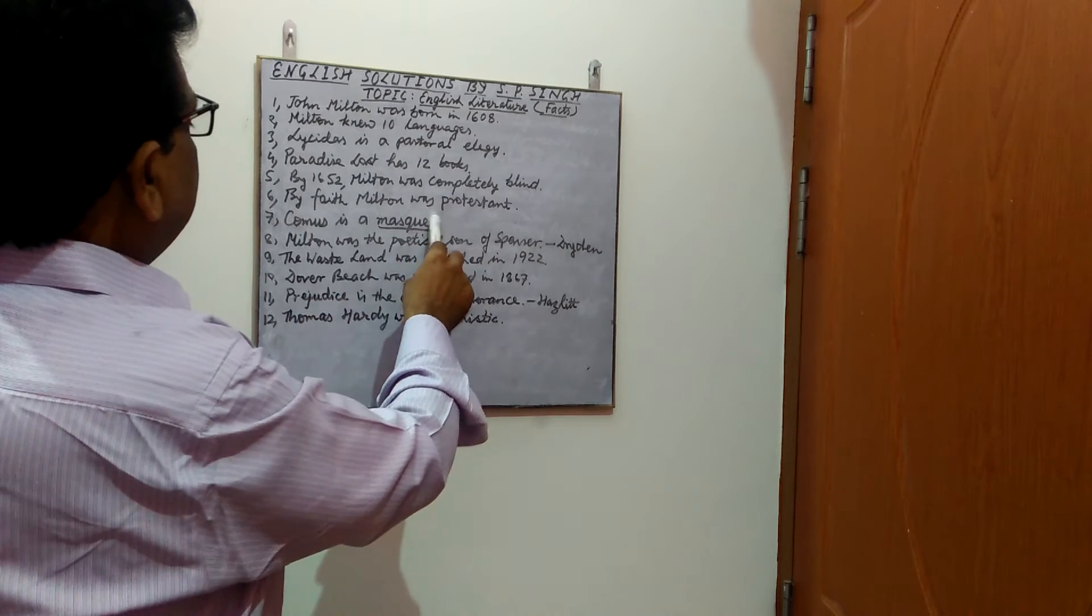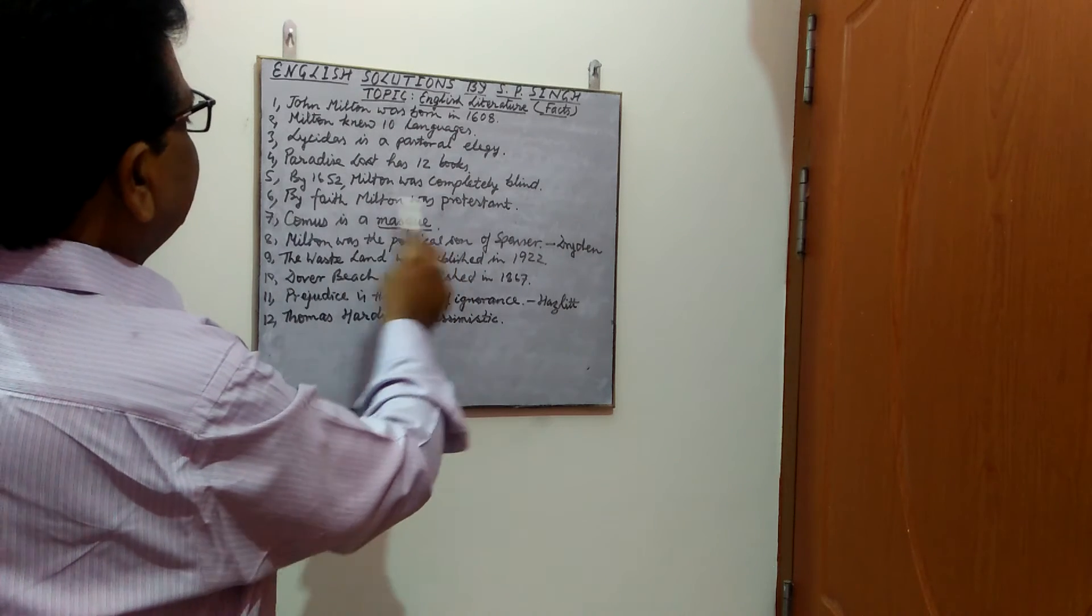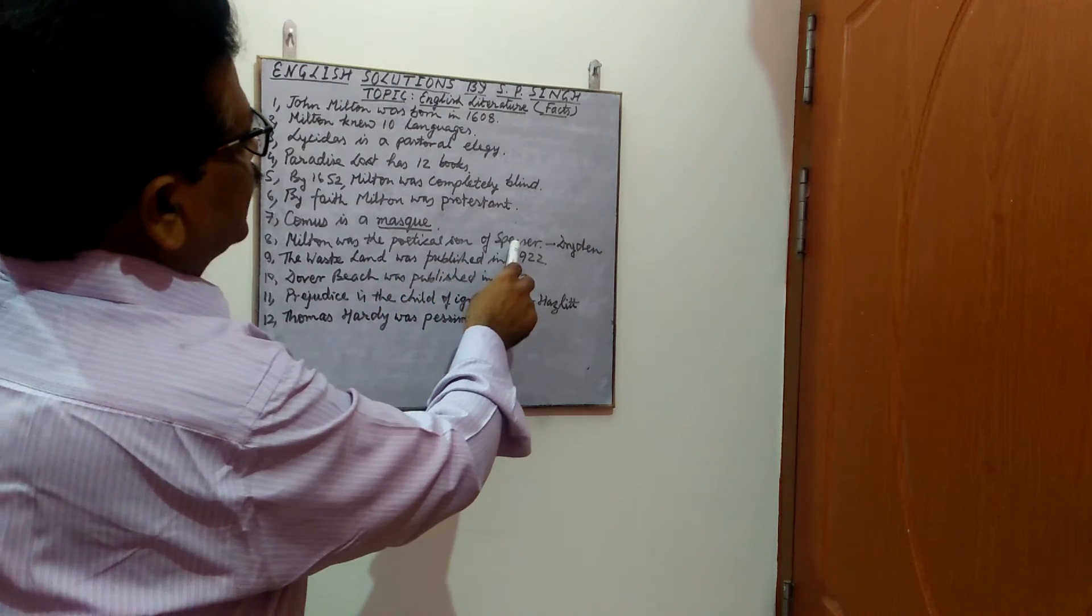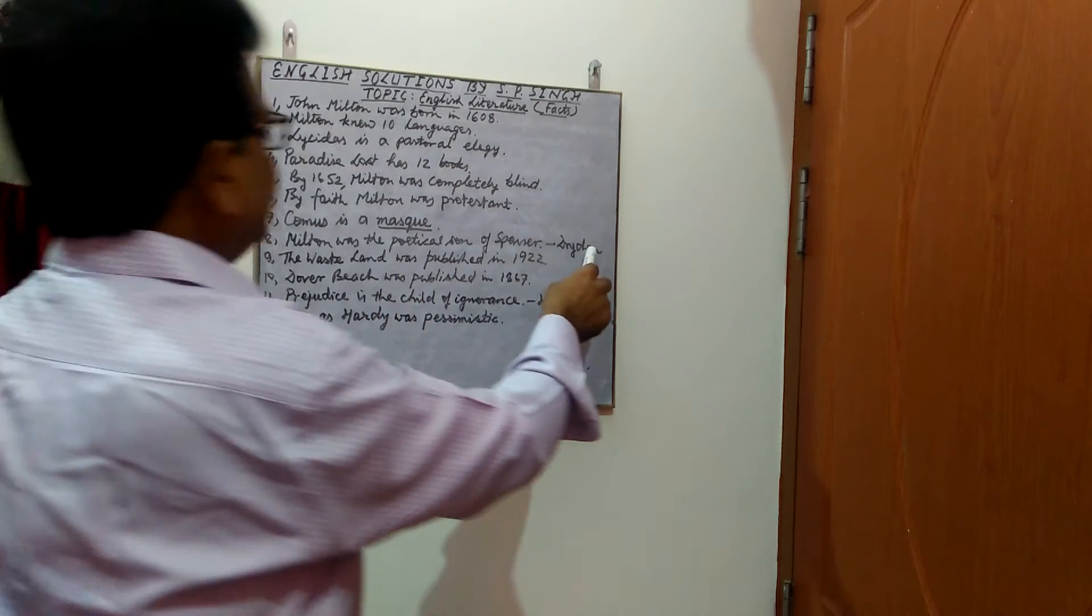Comus is a mask. Very important point, Comus is a mask. Next, Milton was the poetical son of Spencer. This is the statement by John Dryden.